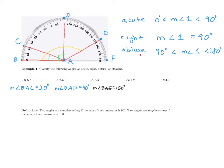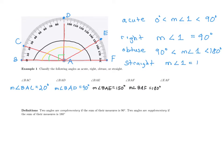One synonym of the word obtuse is dull. If you look at the angle created by BAE, it is not sharp like the acute angle — it comes to a dull point. Now let's look at angle BAF. Drawing that in, it is a straight line. Therefore, the measure of angle BAF is equal to 180 degrees. That is the last term — a straight angle means the measure is exactly equal to 180.